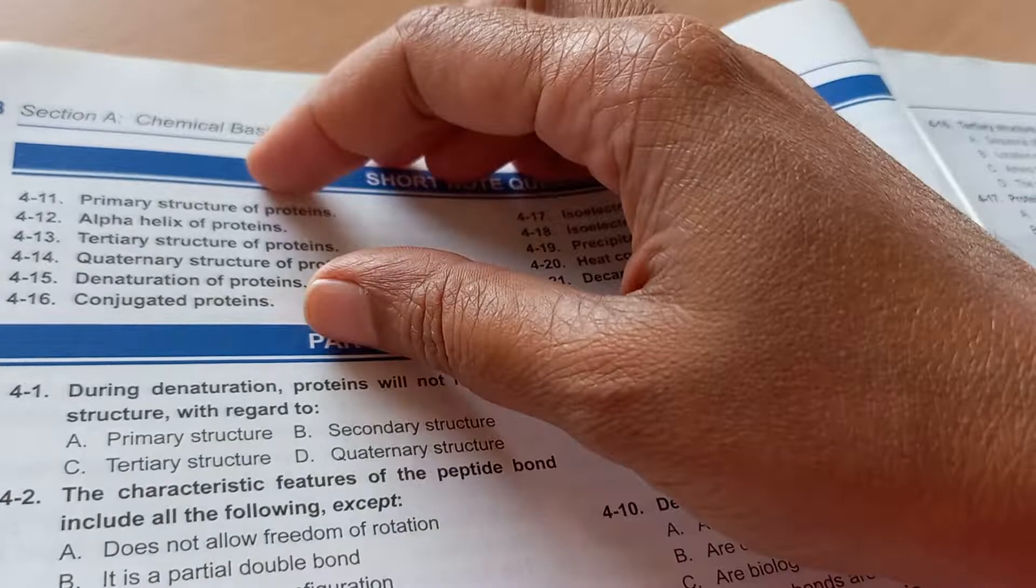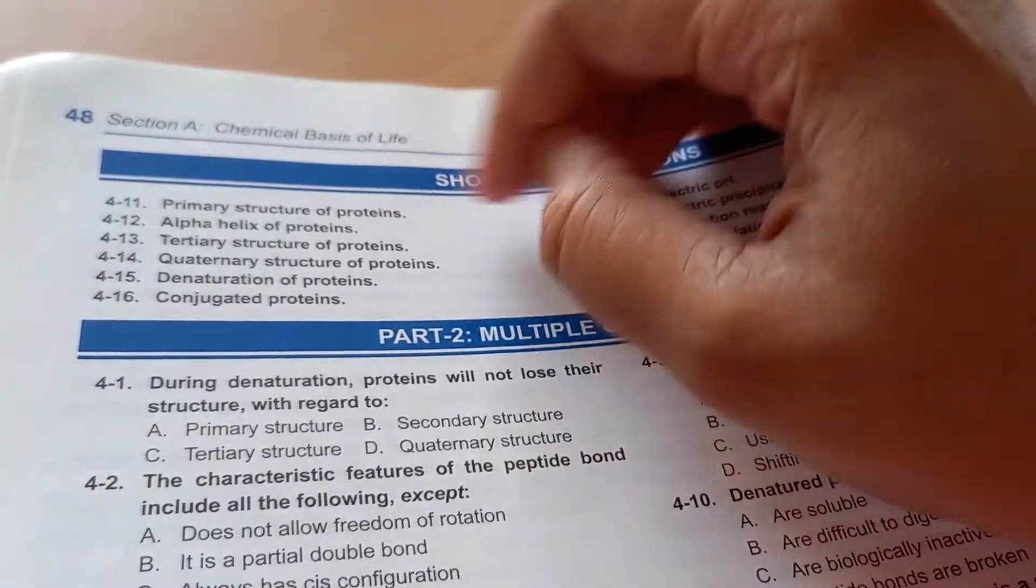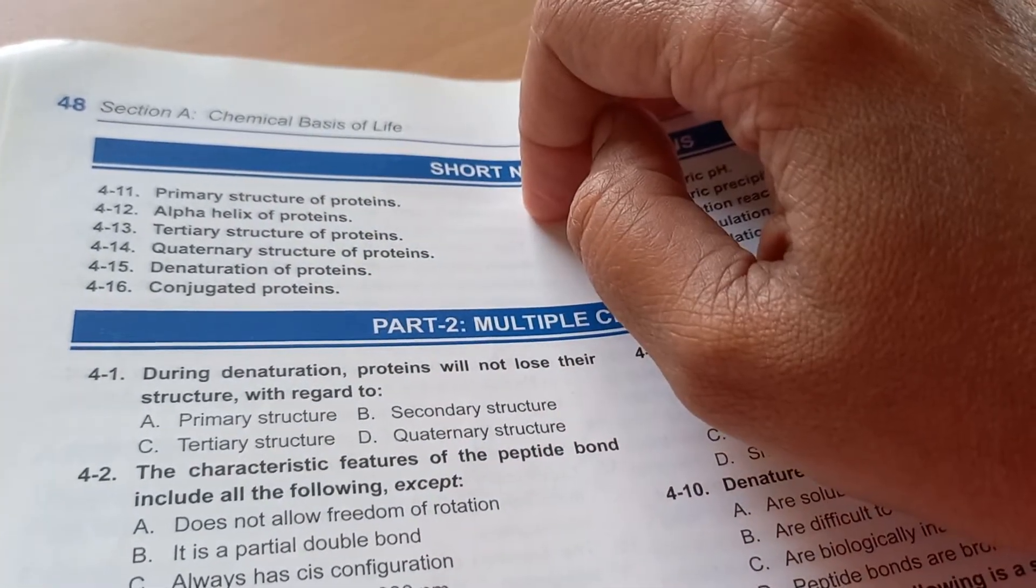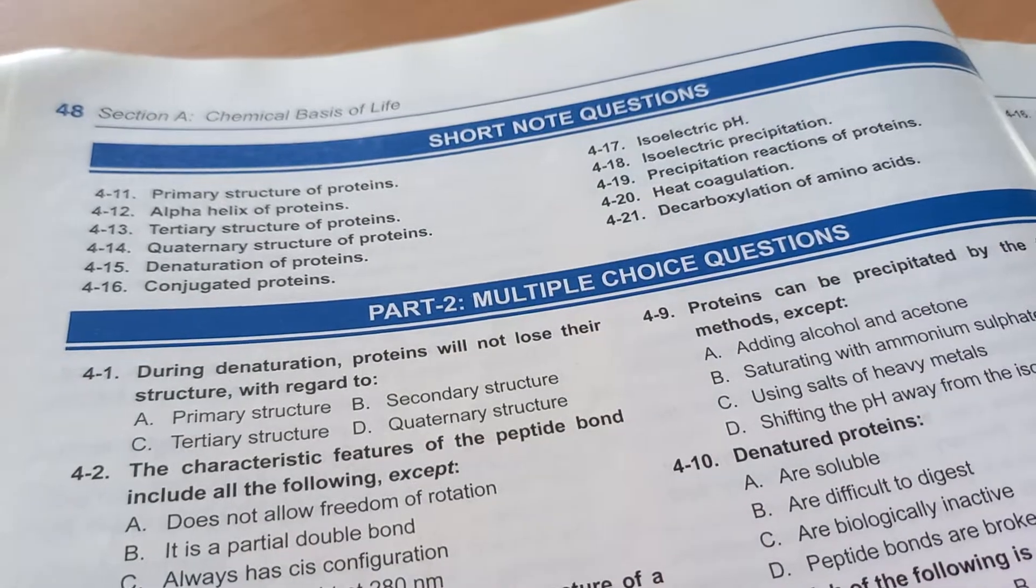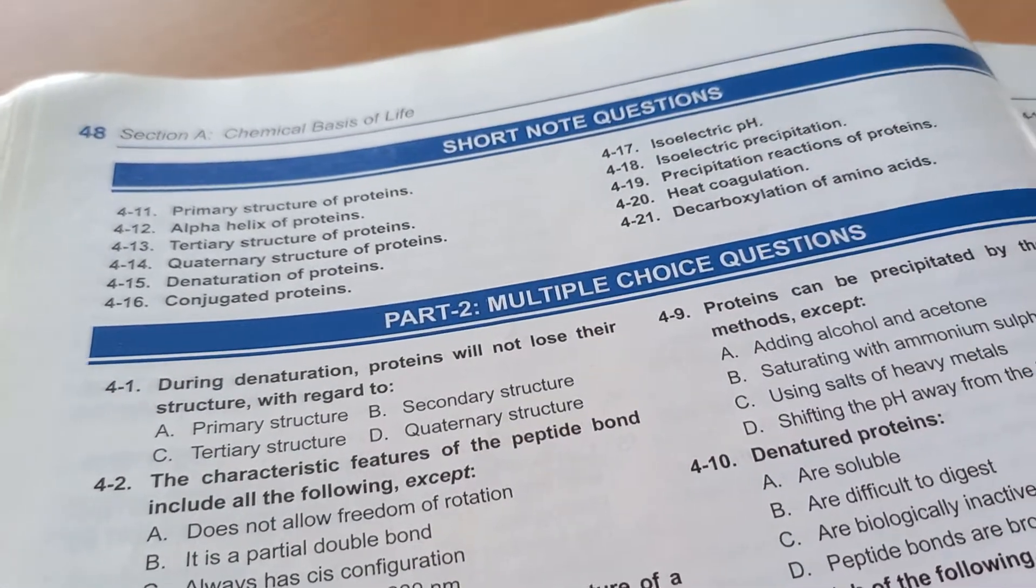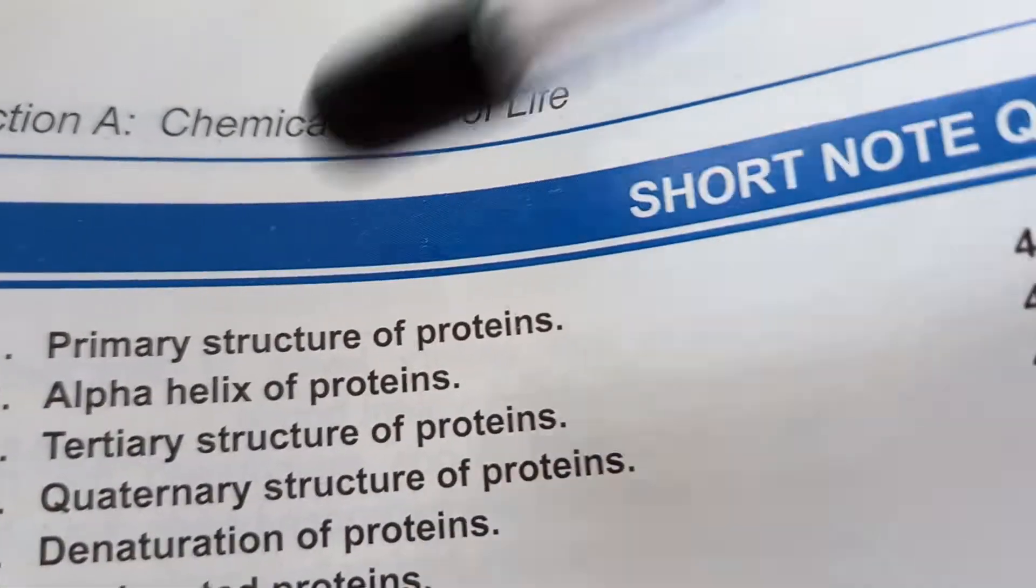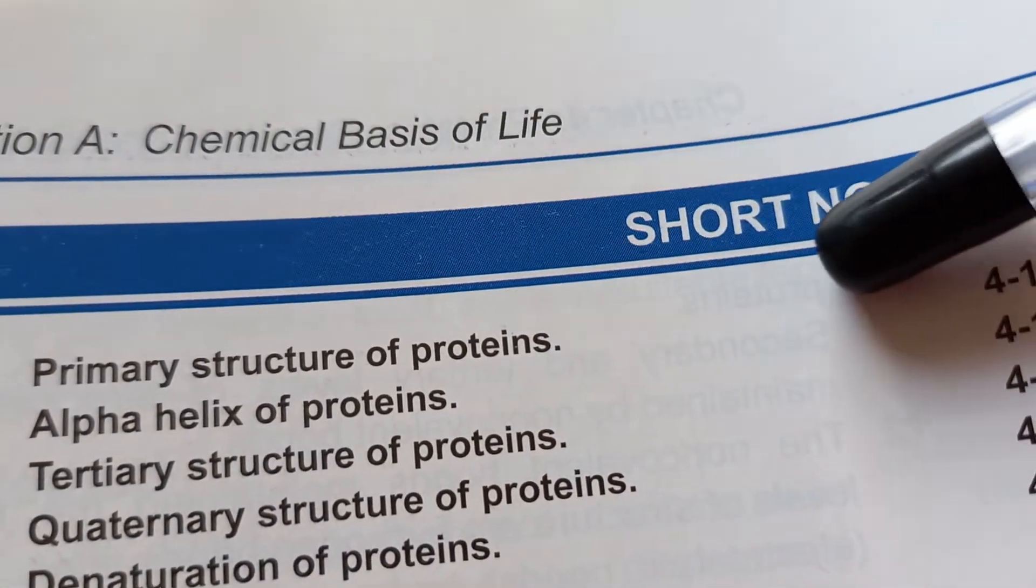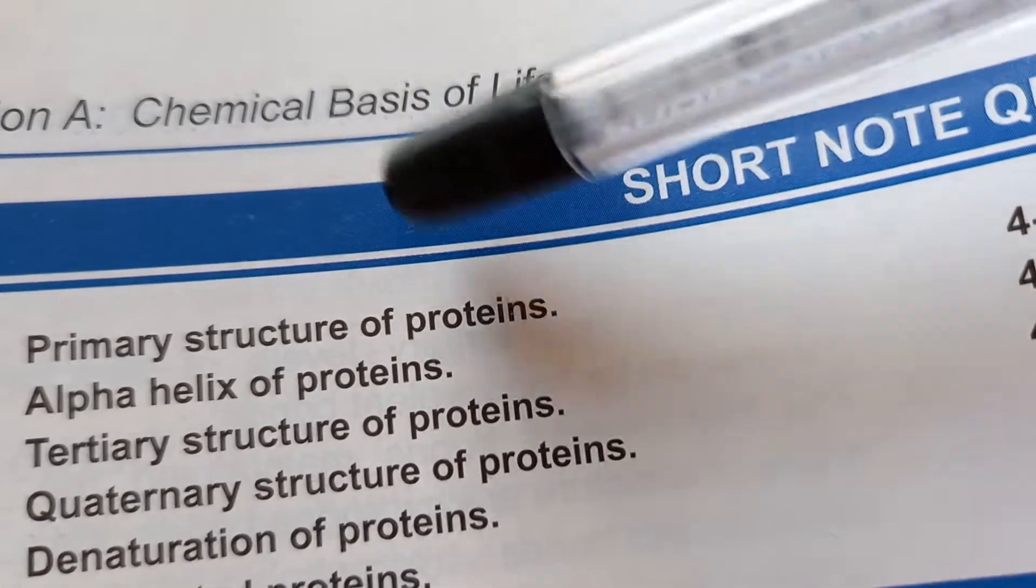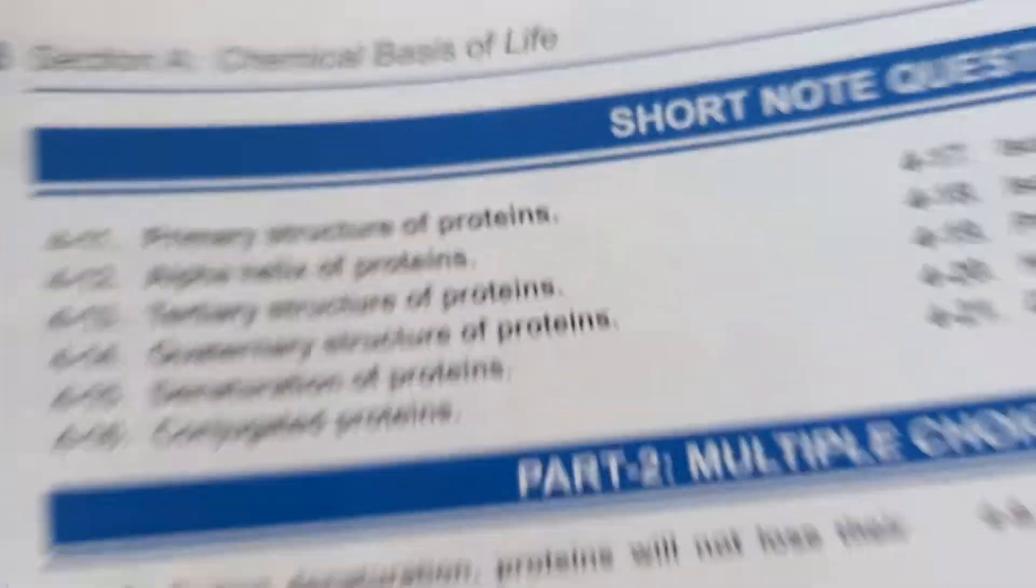Take a pen or a pencil and next to this write the three important words. For example, primary structure of proteins - write three important words and you'll be able to pass. This also will help you in your viva because viva will also be short note questions only. When somebody asks you primary structure of proteins you will say amino acids will be there, they will be bound by peptide bonds, and there will be some disulfide bonds. That's only the primary structure of protein, so easy.